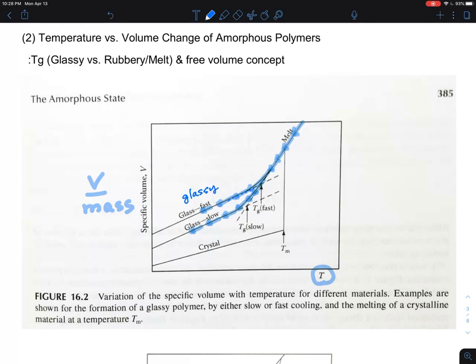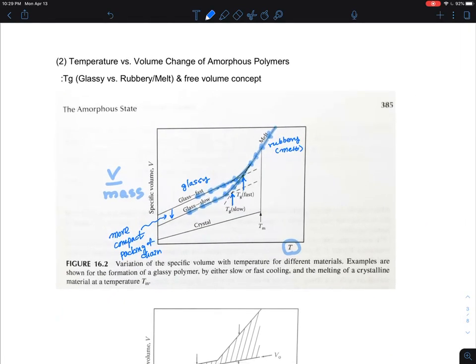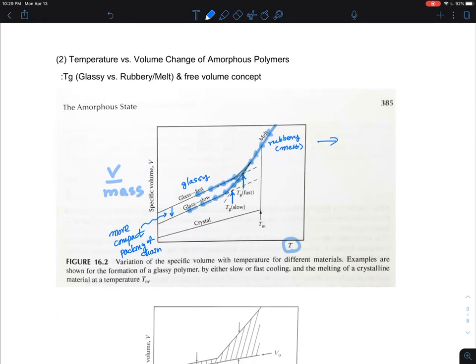This is the glassy state and this is the rubbery state, still called the melt. Depending on the cooling speed, you can have a different Tg. The slower cooling gives you more compact packing of chains, so the density is going up. The glassy state is where polymer chains move very slowly in terms of kinetics.